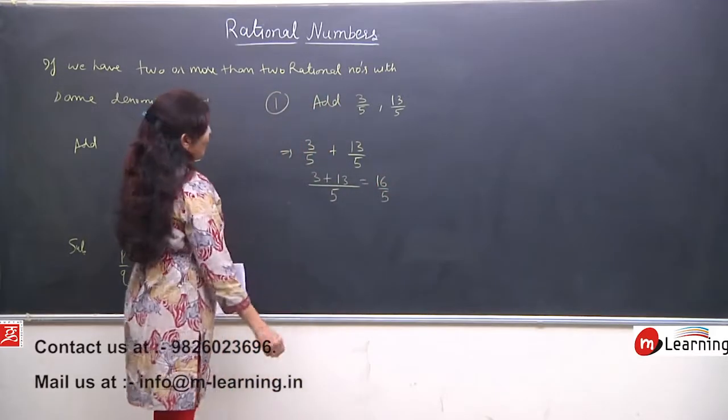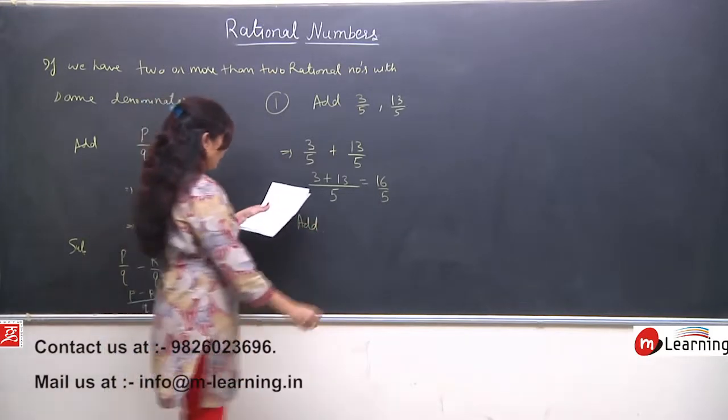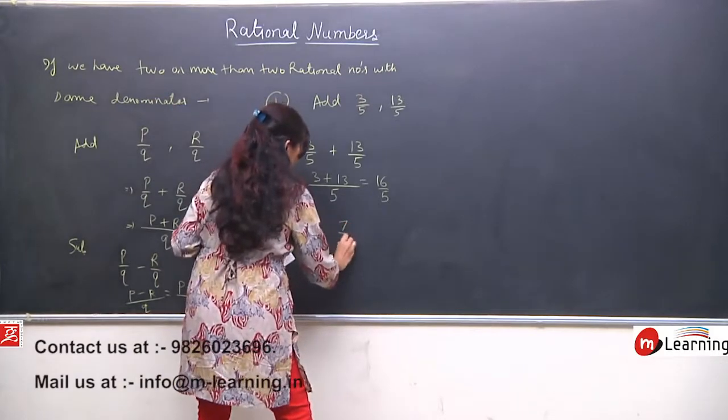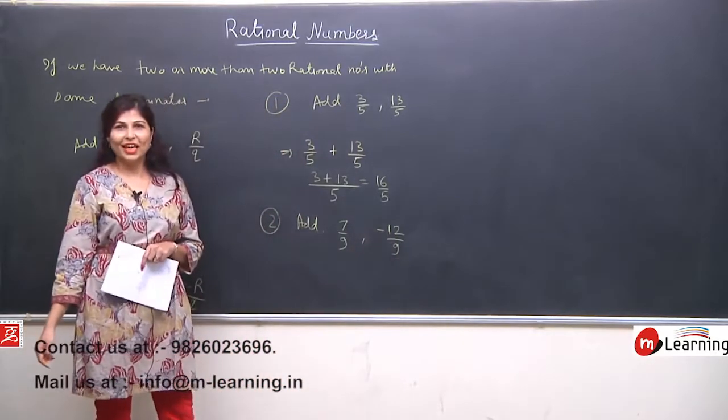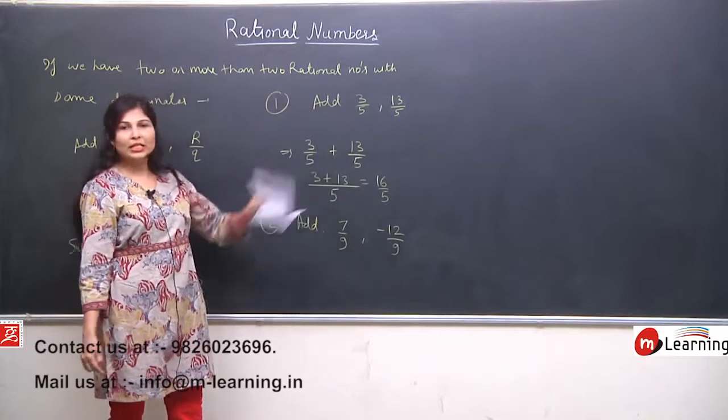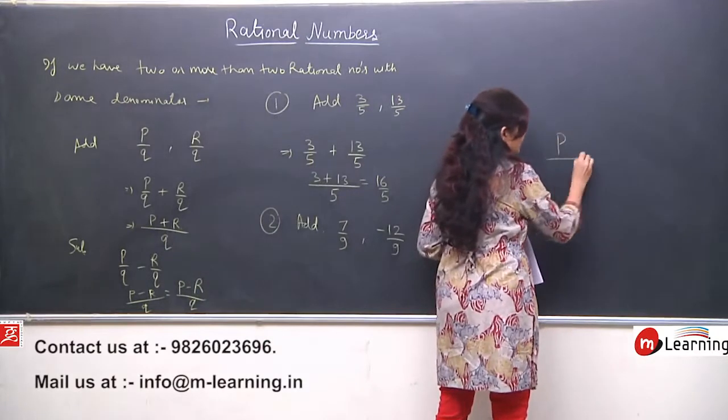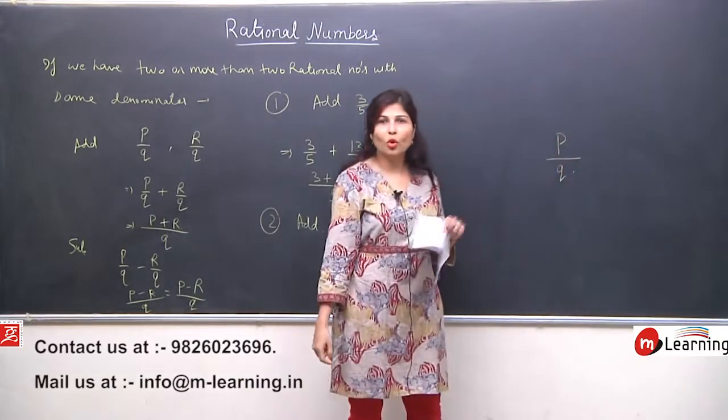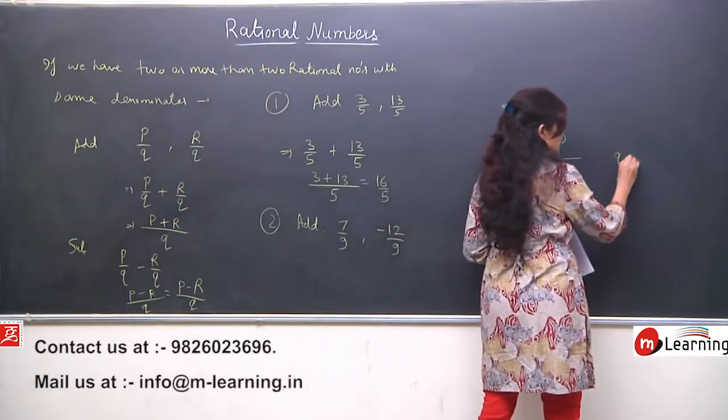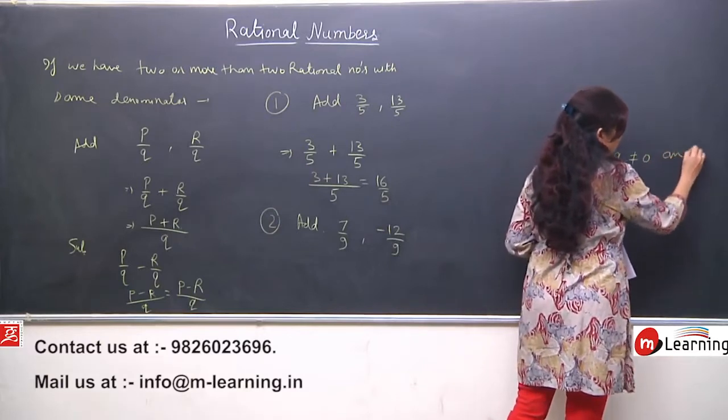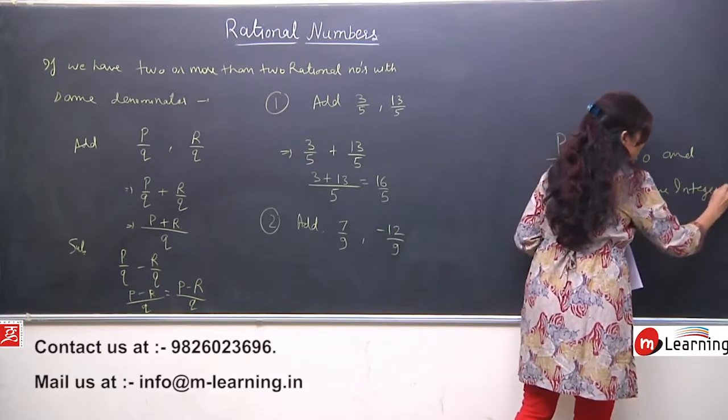Now I am taking another example of addition: add 7 by 9 and minus 12 by 9. This was very simple because both were positive rational numbers. But we have to remember the rational number definition, that rational numbers are those numbers which are in the form of P upon Q where Q is not equal to 0, and important is P and Q are integers.